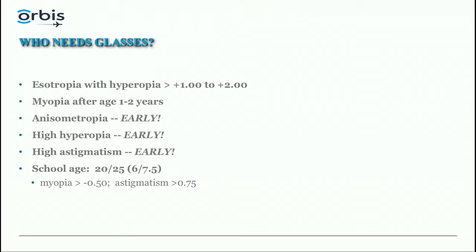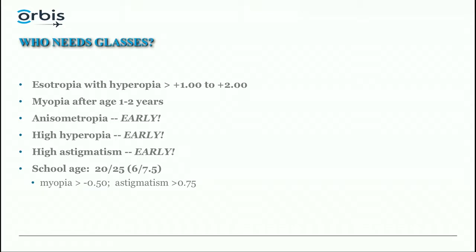Anisometropia, high hyperopia, and high astigmatism need to be treated early because they have the potential to cause amblyopia. For school-age children, they really should see 20/25 or better, which generally means treating myopia of 0.50–0.75 or more, and astigmatism of more than 0.75 to 1.00 diopter depending on the axis.